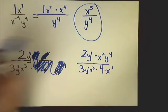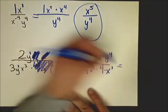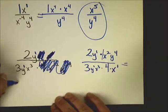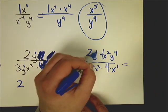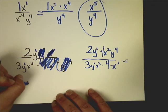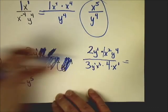And this is two y to the first power. Now I combine things in the numerator. The two times one gives me two. I've got a y to the first and a y to the fourth, that would be one plus four is five, so y to the fifth, and my x squared.